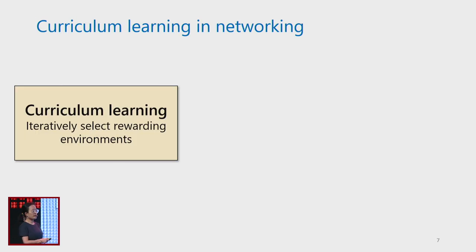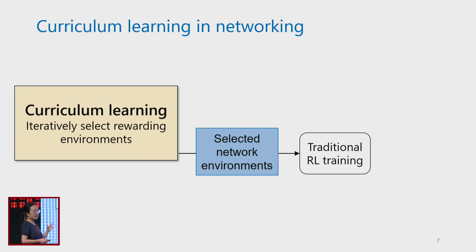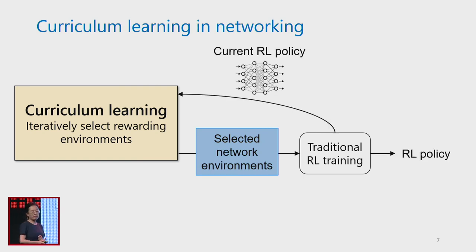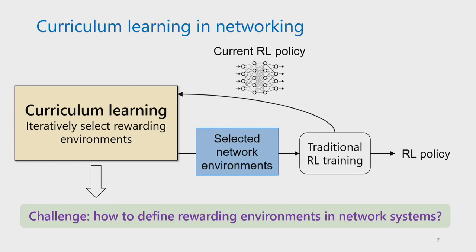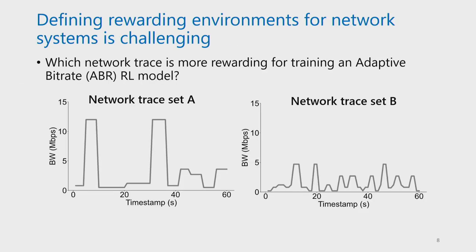You may think curriculum learning in networking is straightforward: iteratively select rewarding environments, send them to RL training, and repeat until you have an optimized RL policy. However, the big challenge is: how do we define rewarding environments in network systems? Looking at two different traces in the ABR environment, both seem rewarding because after adding them, the RL model can learn to be more adaptive to bandwidth changes. But which one is more rewarding? Unlike the maze example, you cannot tell just from the trace itself.